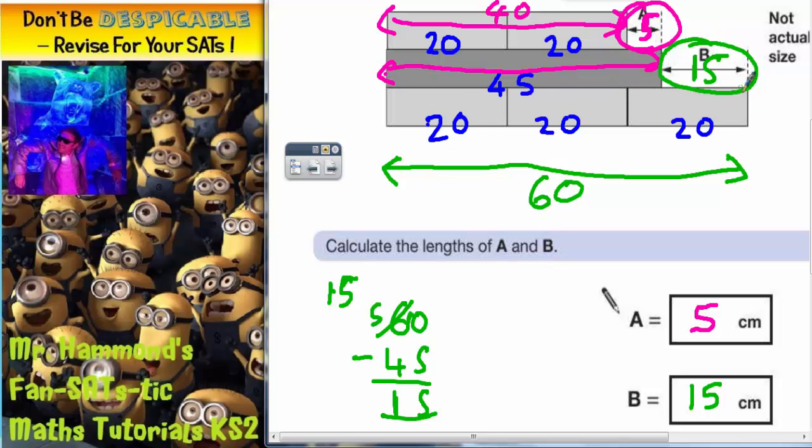So 45 plus this 15 makes the same as these three 20s which is 60. So that works. But again, the key to this one is writing your measurements onto the picture to make it easier to look at.